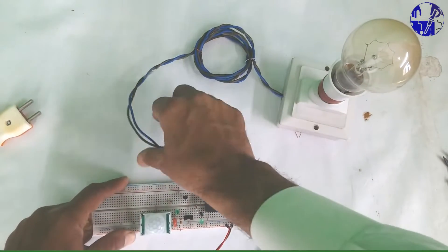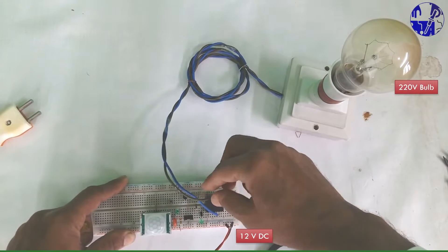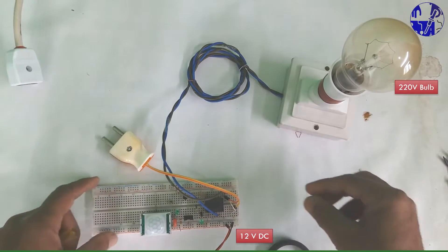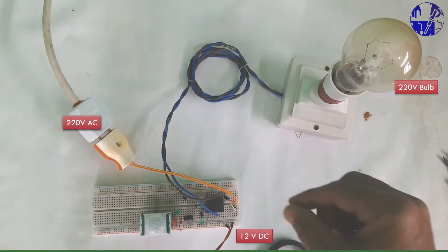After ensuring everything is in order, apply a 12-volt power supply to the circuit and, as a final step, connect the 220-volt power source for the bulb.